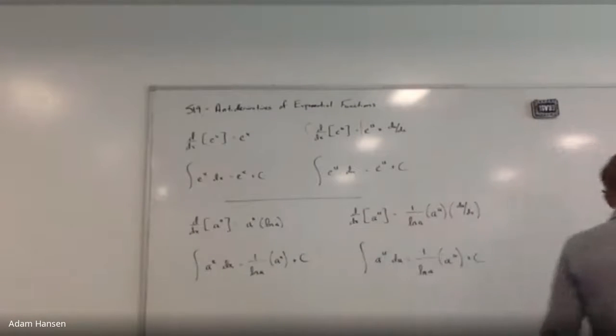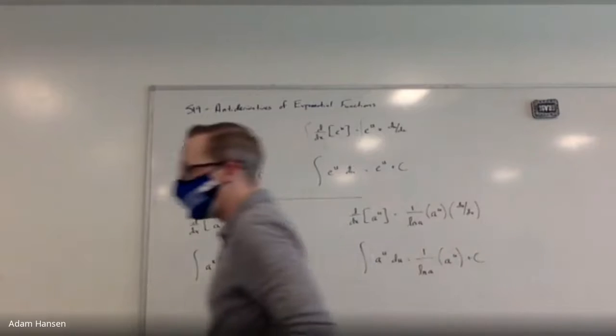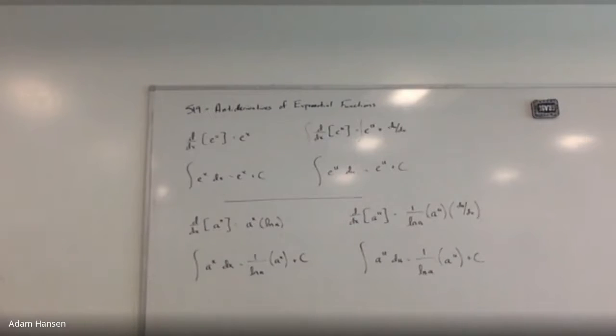In base e, the anti-derivative of e to the u du would be e to the u plus C. It's its own derivative, and therefore it's its own anti-derivative.